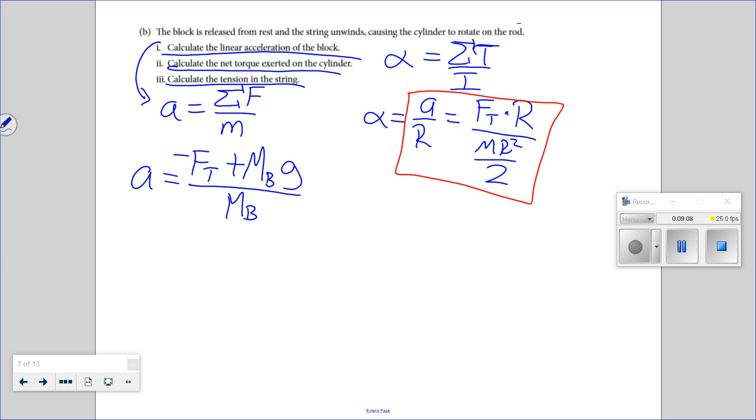Calculate the linear acceleration of the block. Holy smokes. I better be able to solve this problem. Let's set those accelerations equal. So we canceled one R from there. That gets rid of R squared. So this A is equal to force of tension times 2 over mass of the cylinder. Can I group those two together and get FT? Because if I plug in FT, I've got all constants.